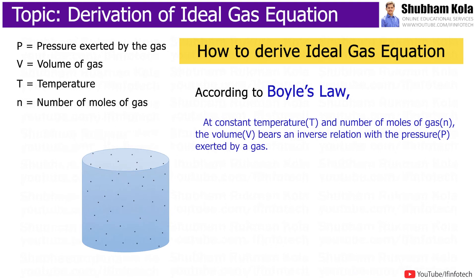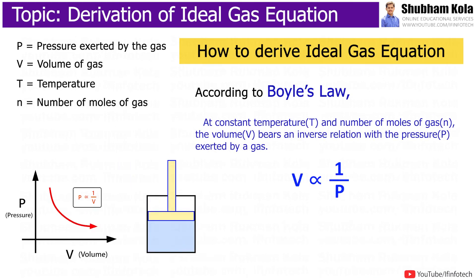According to Boyle's law, at constant temperature and number of moles of gas, the volume bears an inverse relation with the pressure exerted by the gas. That is, V is inversely proportional to pressure P.